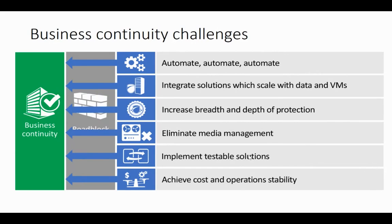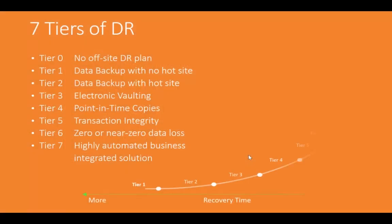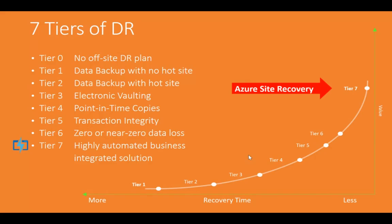There are seven tiers of DR in on-premises environments — from no off-site DR, data backup to hot site, vault, point-in-time copy, up to highly automated DR at level seven. Azure fits as a level-seven DR — we achieve everything: automating replication, hot backup as a copy, planned failover, unplanned failover, and test failover.